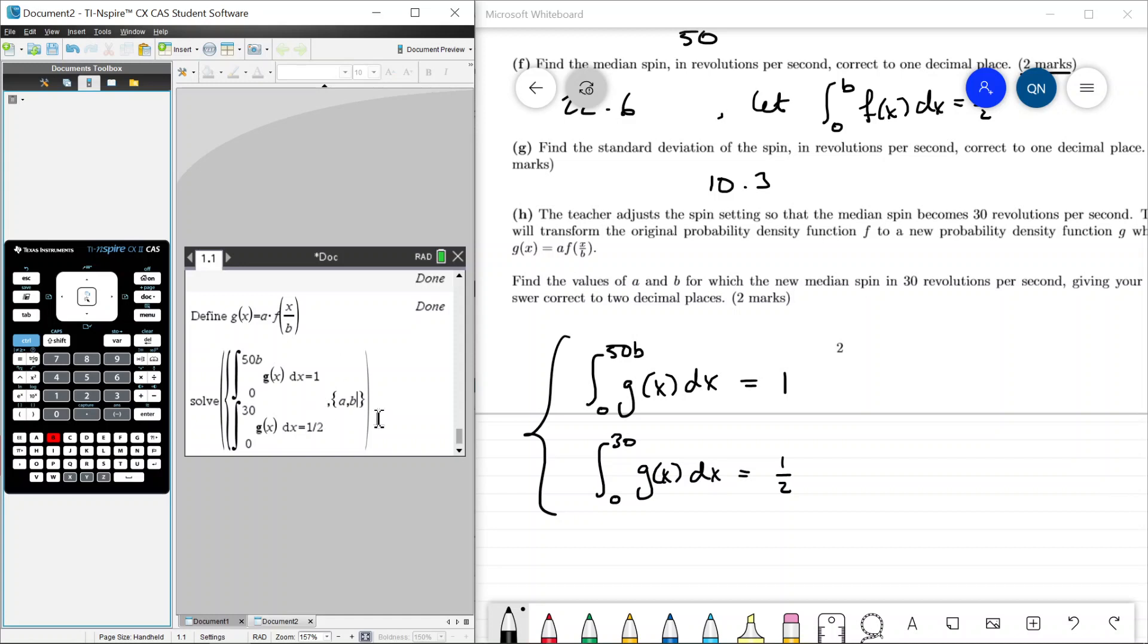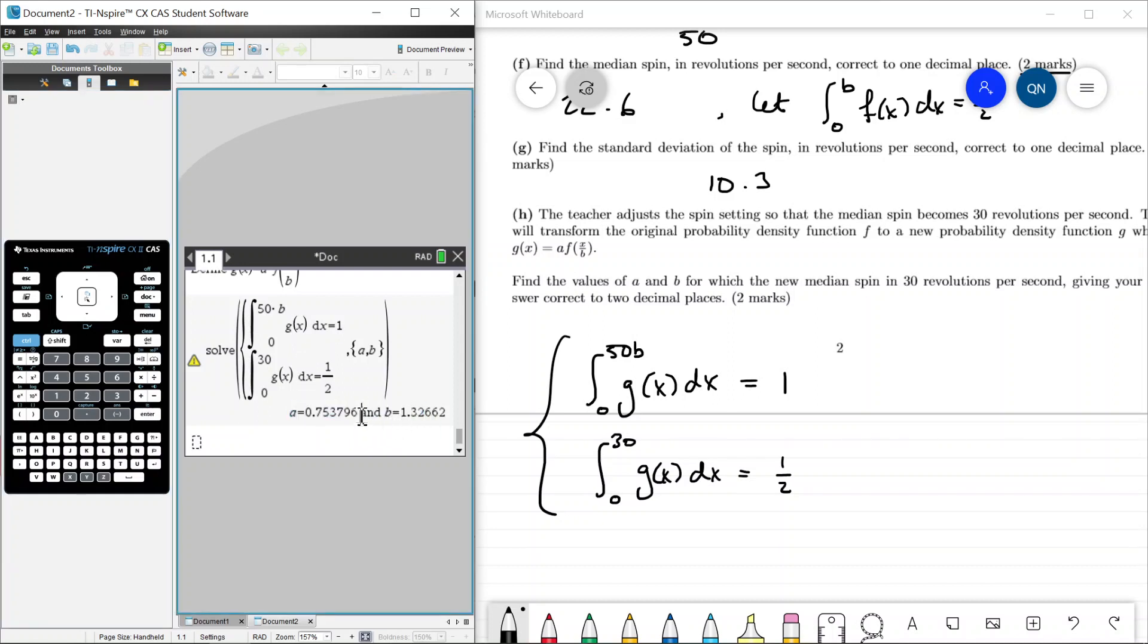So yeah, I did have someone say that the CAS froze or something like that, or several people. But yeah, so what do we get? We get that a is equal to 0.75 and b is equal to 1.32, and that's the answers.